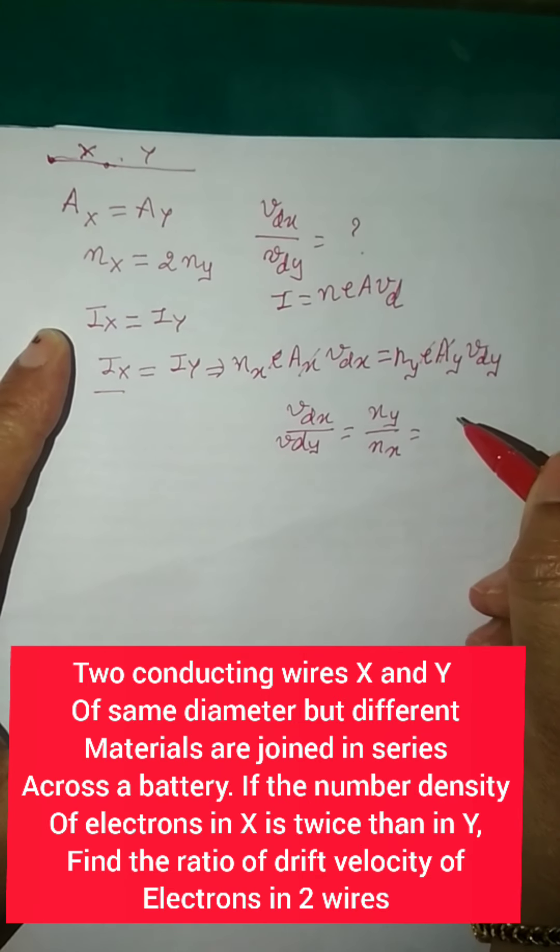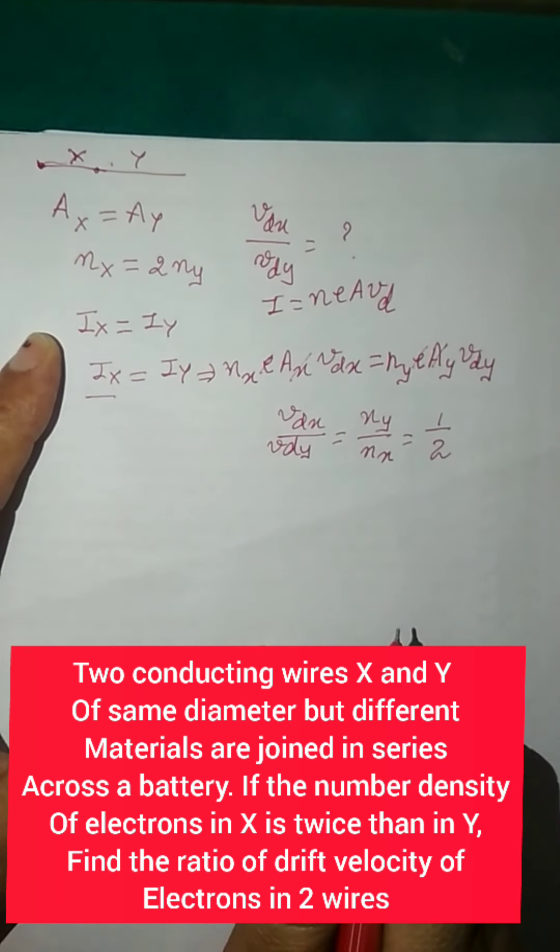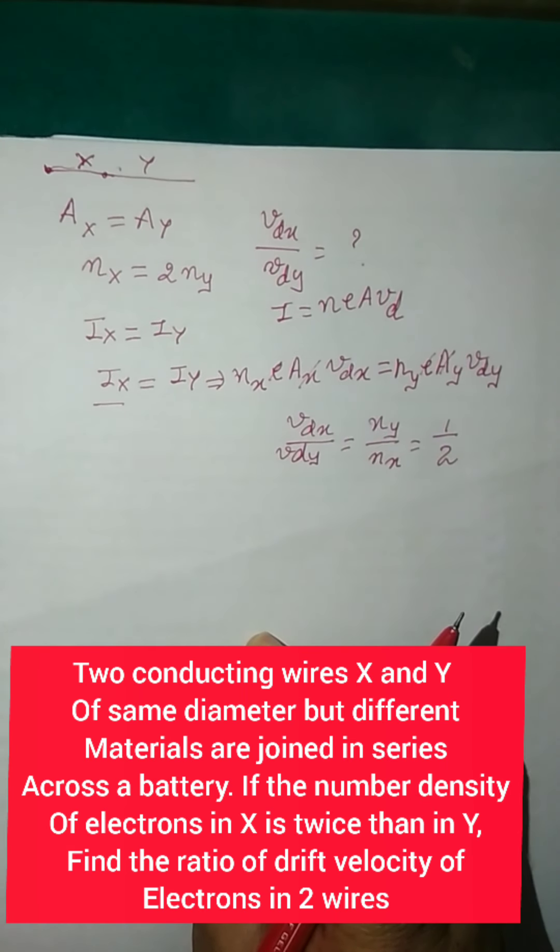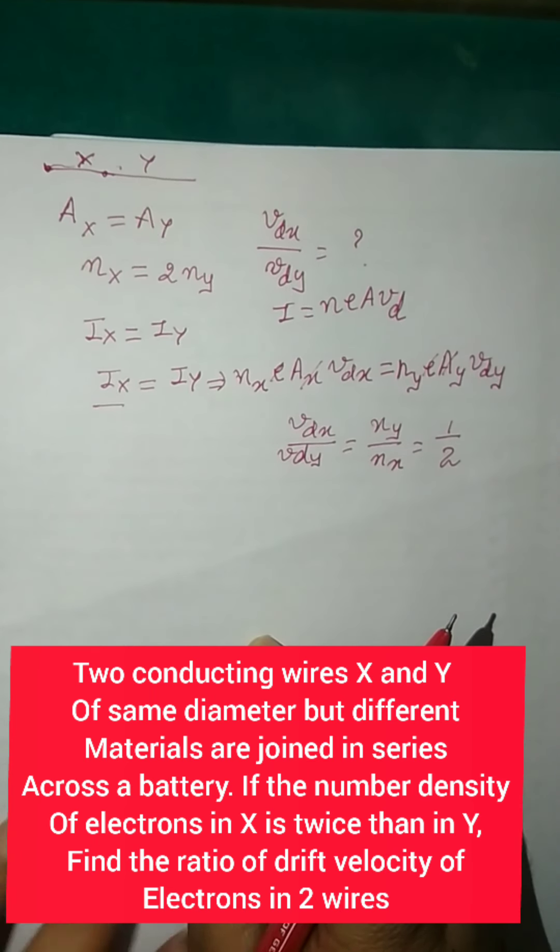And what is the ratio of ny by nx? So as you can see that the ratio of ny by nx is equal to 1 is to 2. So what is the ratio of drift velocities of x and y? It will be equal to 1 is to 2.